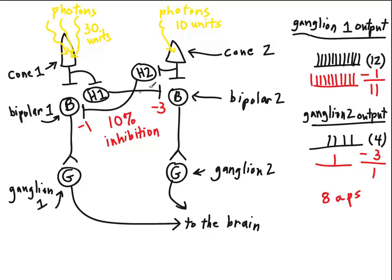Now, though, since we've added the lateral inhibition in from horizontal cell number 1 and horizontal cell number 2, we can see that we have 11 from number 1, 11 action potentials per second, 1 action potential per second from ganglion cell number 2. The difference between those two is 10 action potentials per second.